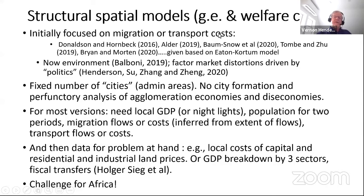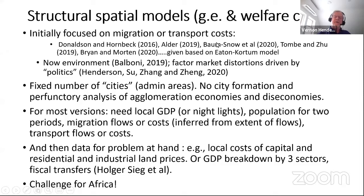There's a huge literature now on structural models for general equilibrium effects and welfare costs. These include a historical US paper, papers on India, two on China, and one on Indonesia.